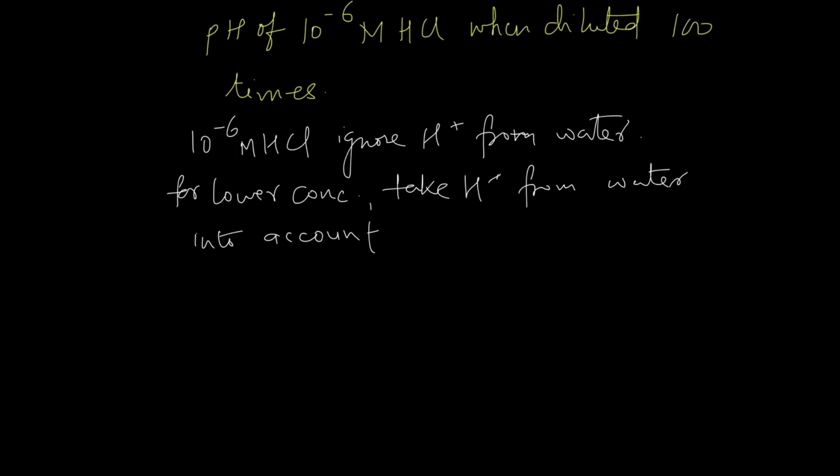For our problem we have 10 to the power minus 6 M HCl diluted 100 times, so therefore we will divide it by 100 and get 10 to the power minus 8 M HCl, which gives us an H+ concentration of 10 to the power minus 8. Therefore we need to consider the H+ that is coming from water.